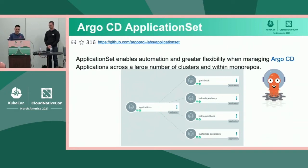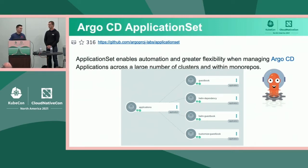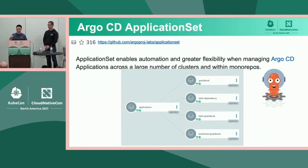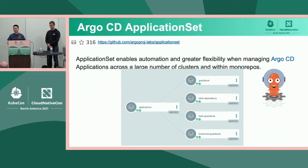Next, we have Application Sets. The use case is: if you've been using Argo CD for some time, you might have felt the need to automate the creation of many applications. For example, maybe you run hundreds of clusters and need the same application installed in each, or you have a monorepo with everything to install and want to create an application for every directory. Application Set is a controller which helps automate this process and create sets of applications.